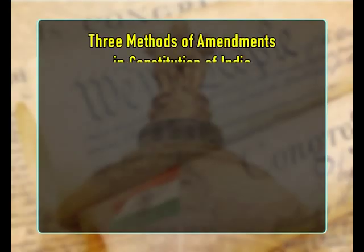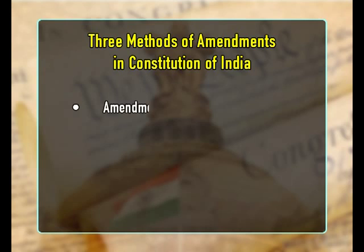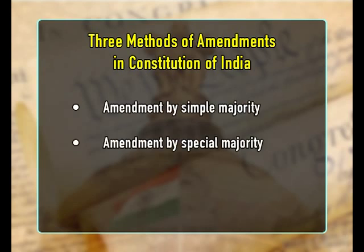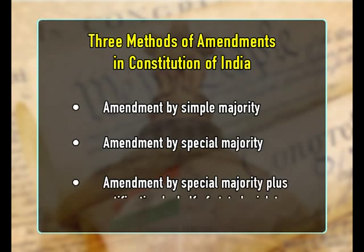There are three methods of amendment in the constitution of India: amendment by simple majority, amendment by special majority, and amendment by special majority plus ratification by half of state legislatures.